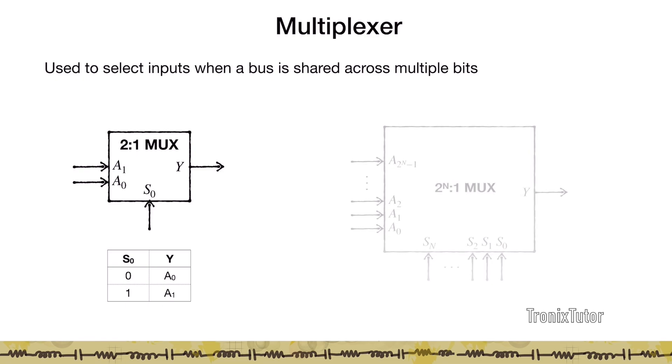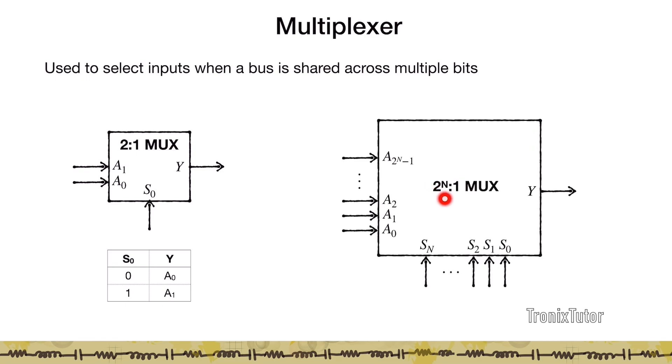Using these MUXs, I can build a 2 to the power of n to 1 MUX which takes in 2 to the power of n bits. This has an n bit select word and is able to have one output. What the select word does is by applying this word, I can choose either one of these lines to be connected to the output. This MUX is used a lot when we want to select from a certain set of inputs.